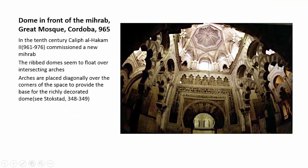Here you can see a series of keyhole arches, built in the 10th century at this great mosque. A new caliph commissioned a new mihrab with these ribbed domes that seem to float. They put diagonal arches in the corners to provide a base for the dome structure.